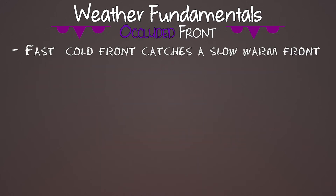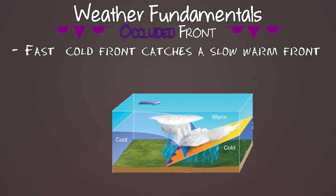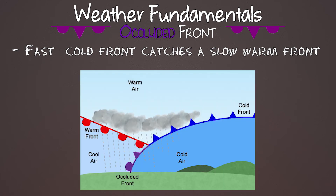An occluded front happens when a fast-moving cold front catches up to a slow-moving warm front. There are two types. In the first, cold air is ahead of warm air and then the coldest air catches all three — it pushes the warm air aloft on top of the cold air and pushes the cold front ahead of it. The second type has cold air, warm air, and then cool air — not as cold as what's ahead of the warm air, but cooler than the warm air in the middle. That cool air forces the warm air up and rides up on top of the cold air, creating a lot of upward motion. If the air is unstable, this produces severe weather like embedded thunderstorms and heavy rain.